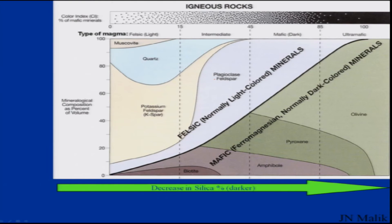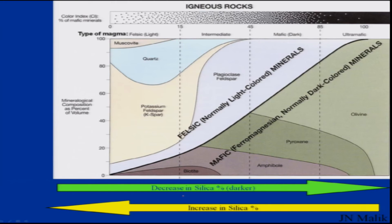Based on the color index, if you move towards more mafic minerals you will see darker colors, whereas having fewer mafic minerals gives lighter colors with feldspar minerals. This also indicates that moving from lighter to darker minerals shows a decrease in silica percentage, while moving the other way shows an increase in silica percentage.